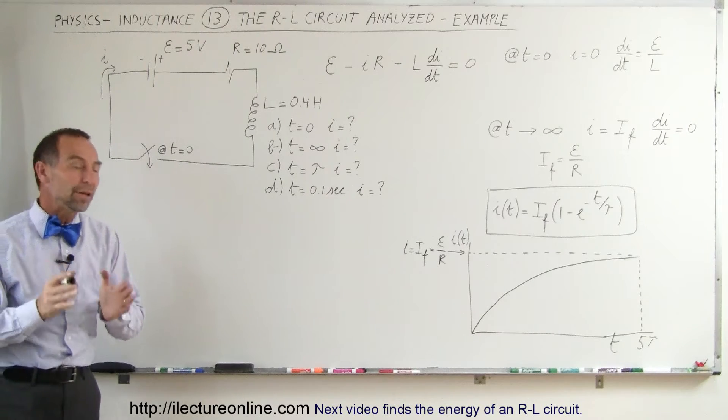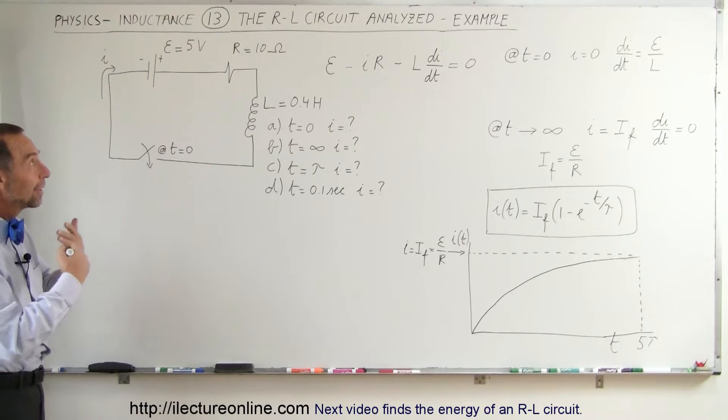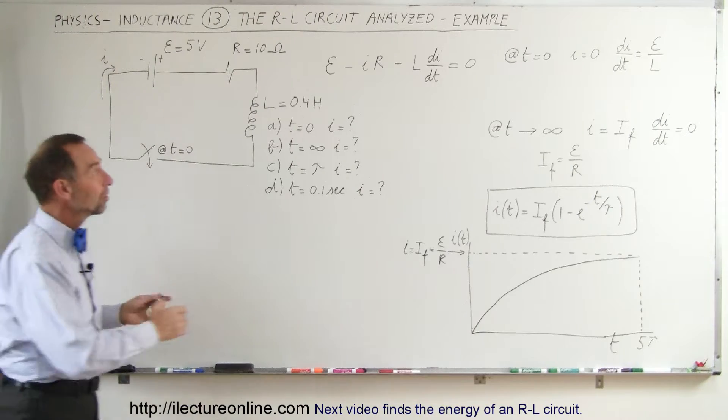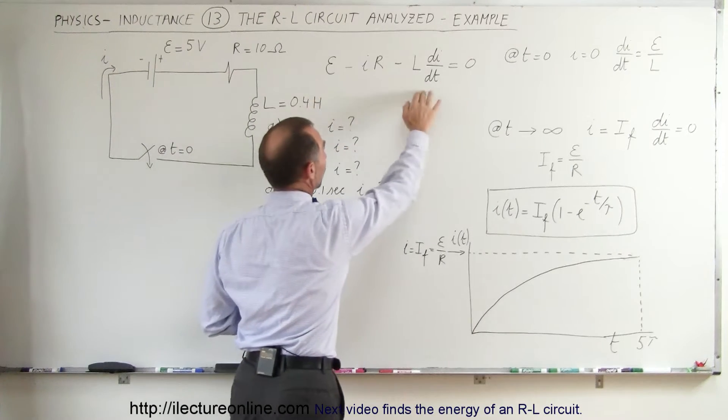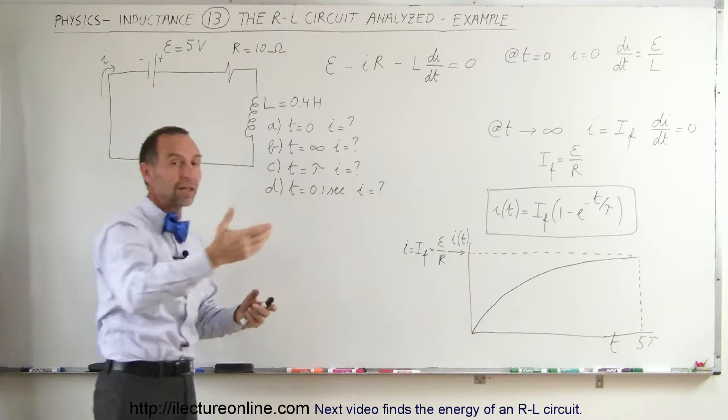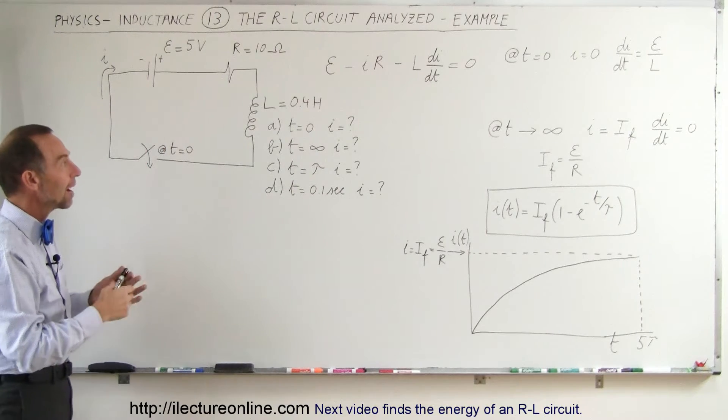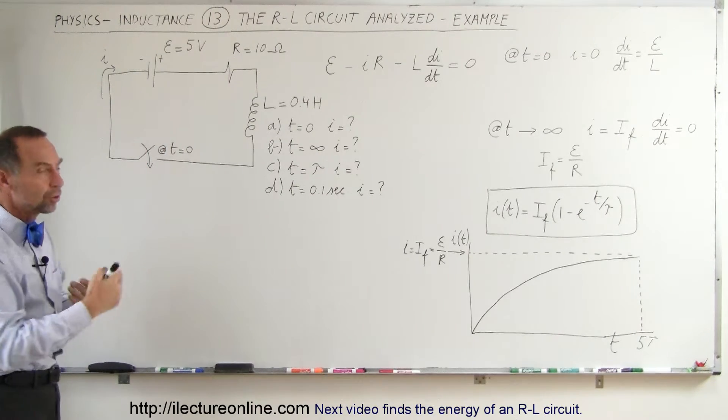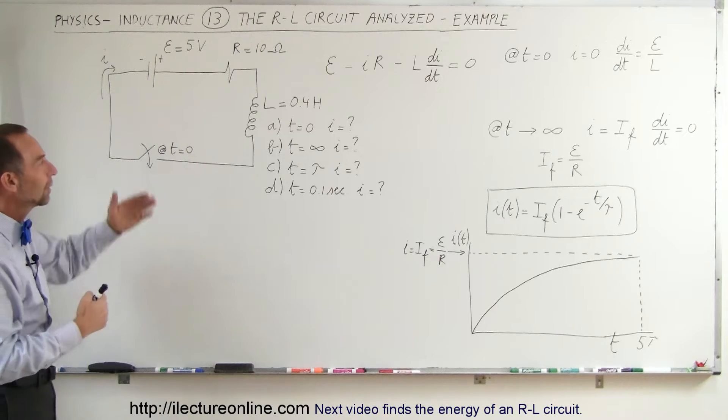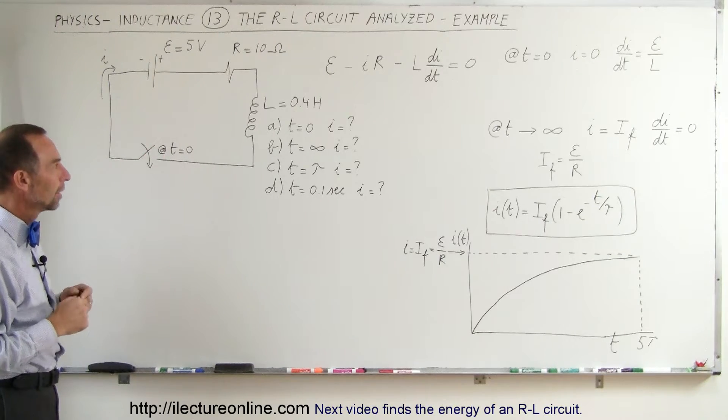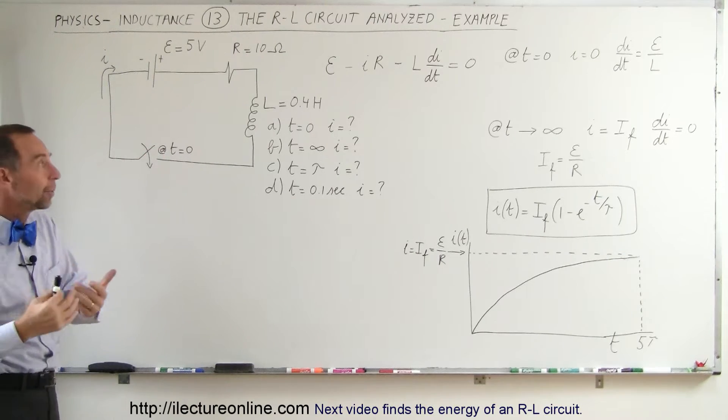Welcome to iLectro online. In the previous video we showed you the theoretical analysis using this equation right here, simply going around the circuit and adding up all the voltages and then solving that for i, the current, at any point in time, to see what an RL circuit is and how it behaves and how an inductor behaves in such a circuit. But what we're going to do now is do an example.